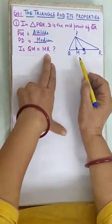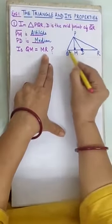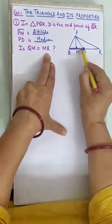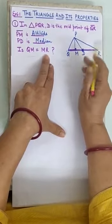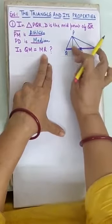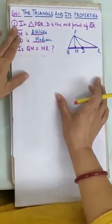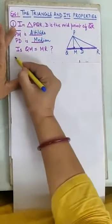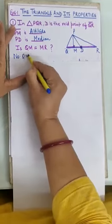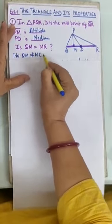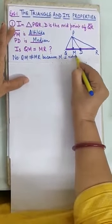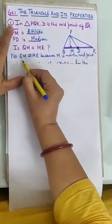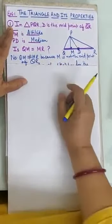Is QM equal to MR? No, because M is not the midpoint of QR. So we write: QM is not equal to MR, because M is not the midpoint of QR.